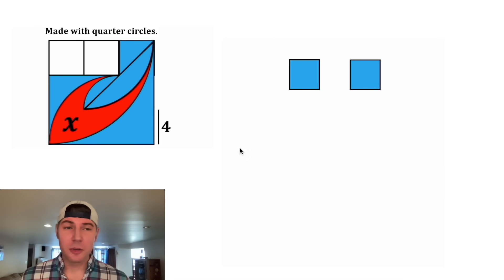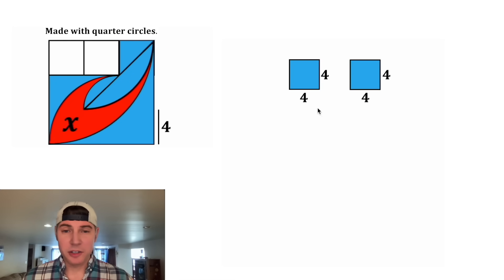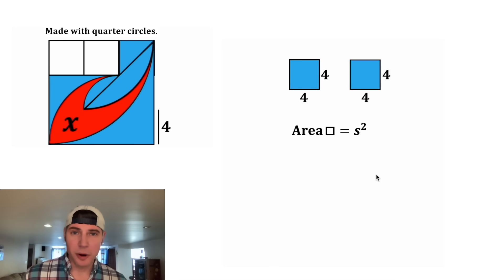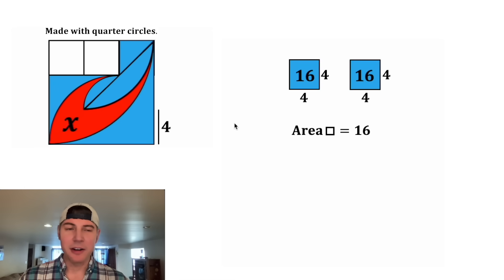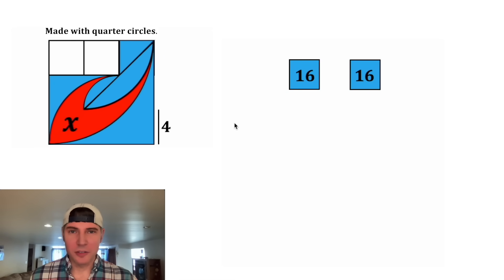First let's do these two squares. The sides of these squares are equal to 4. The area of a square is equal to the side length squared, so we'll plug in 4 for the side length, and 4 squared is equal to 16. So both of these have an area of 16. Now that we've solved these, let's make them orange and put them back.